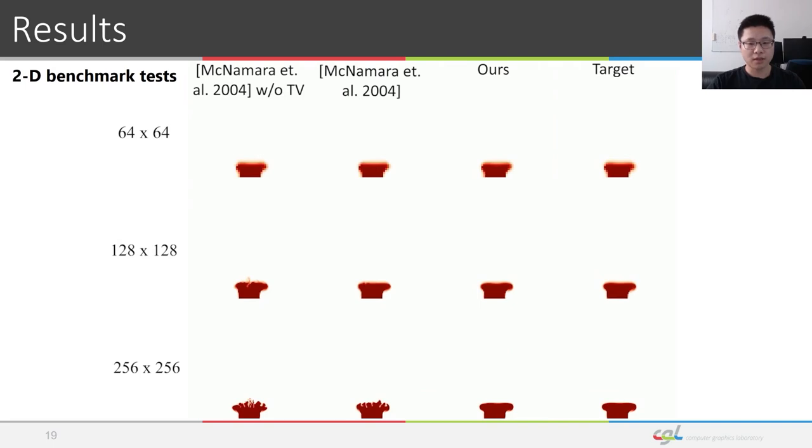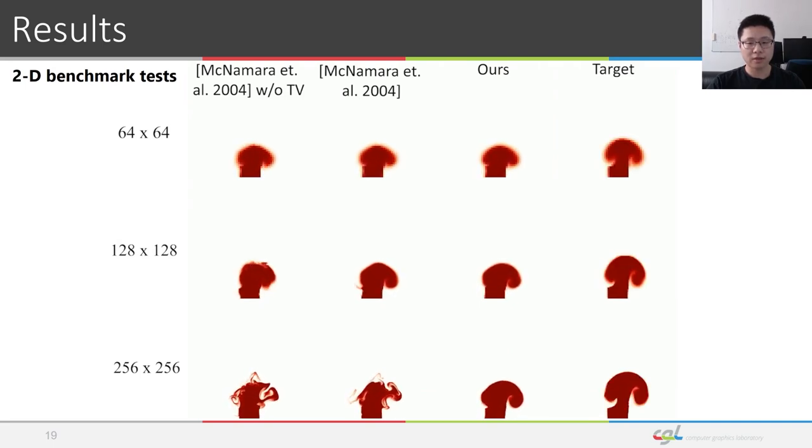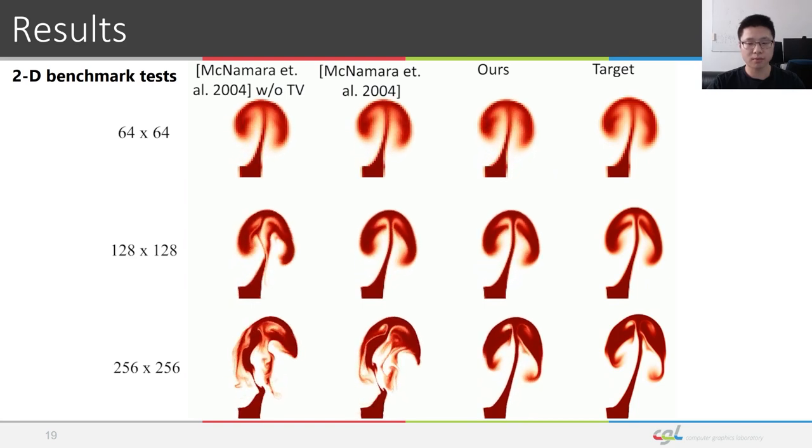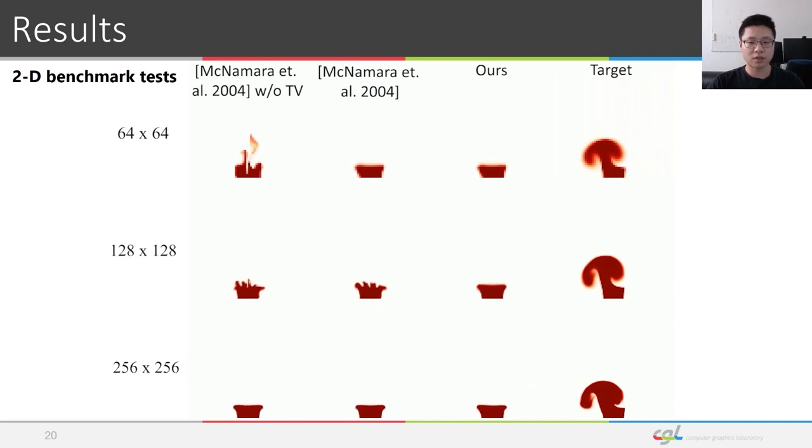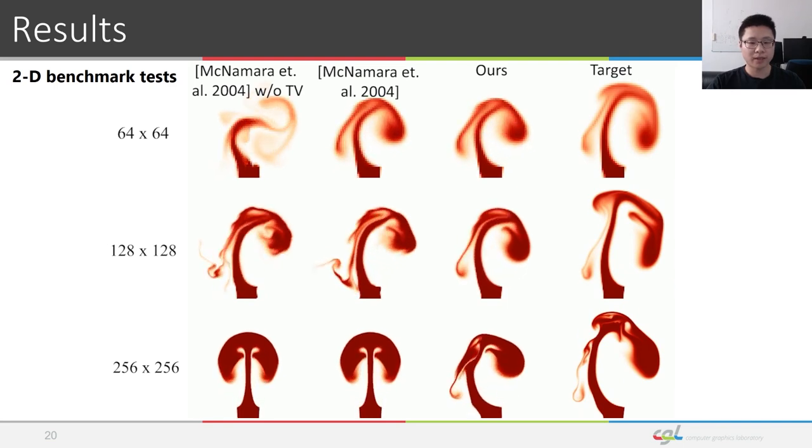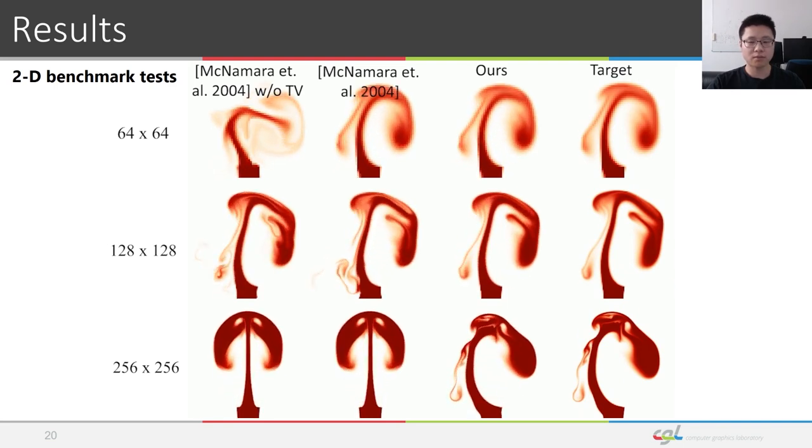In the benchmark tests, we show again that employing smoothness regularization improves the results of McNamara et al. But the same weights for the regularization terms do not really map to higher resolutions. Our approach is able to automatically find a smooth transition between frames without the need for parameter tuning.